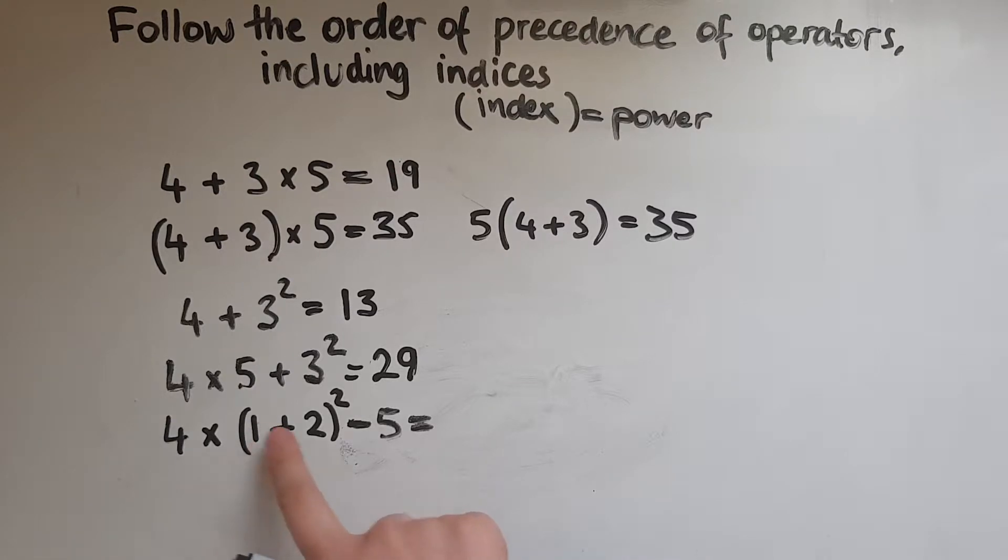4 times 1 plus 2 squared minus 5. So it's 4 lots of this which has been squared. This is 1 plus 2 to make 3 and that's all squared. So 3 squared is 9.